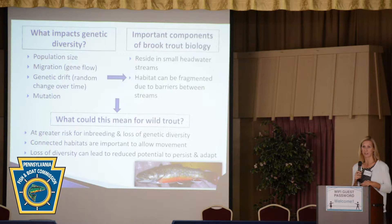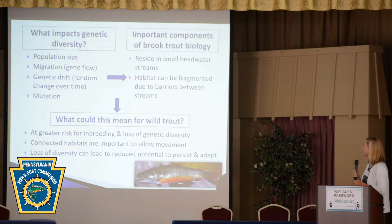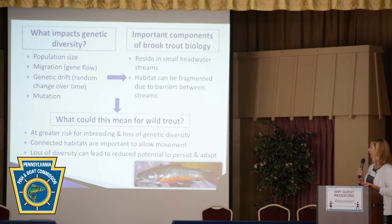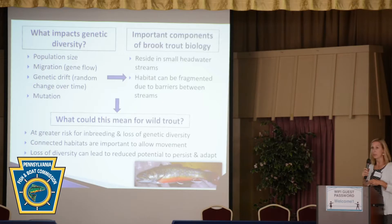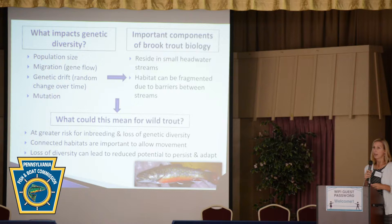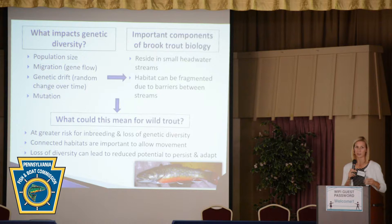When we think about some of the basic components of brook trout biology — in Pennsylvania, brook trout are often living in headwater streams, habitats are small, and populations are potentially fragmented. So right off the bat, relating that back to these basic factors about genetic diversity, we're concerned about a greater risk of inbreeding and the loss of genetic diversity because populations are already potentially small and fragmented. The connectivity of habitats is really important from a genetic standpoint because it allows individuals to move from one population to the next, helping to maintain genetic diversity not just of an individual population but of the broader metapopulation of brook trout in an area or watershed.